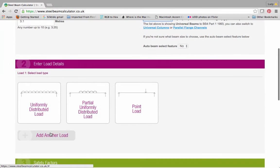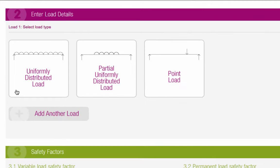For the next section, you need to know what type of load your beam will be supporting. A uniformly distributed load is where the load is evenly distributed across the full length of the beam. A roof or floor would fall into this category.